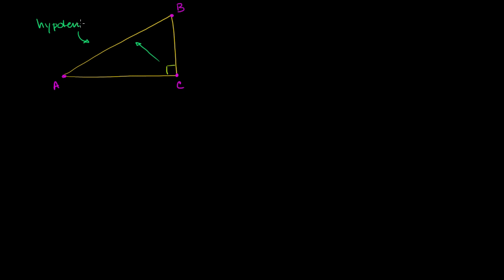This triangle that we have right over here is a right triangle, and it's a right triangle because it has a 90 degree angle in it. We call the longest side of a right triangle — the side opposite the 90 degree angle — the hypotenuse. It's a very fancy word for a fairly simple idea: just the longest side of a right triangle or the side opposite the 90 degree angle.